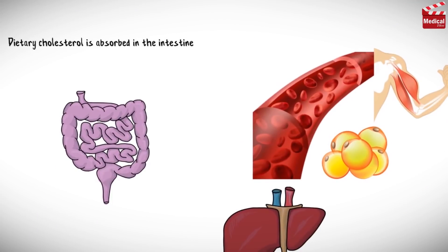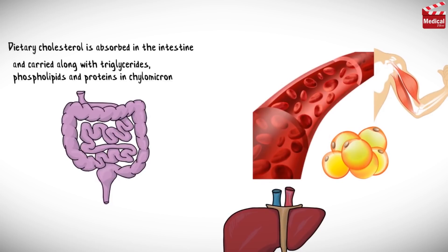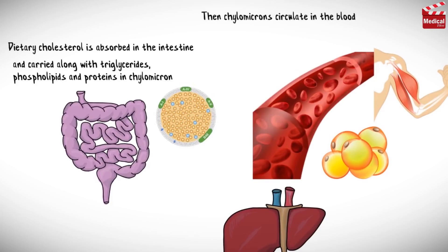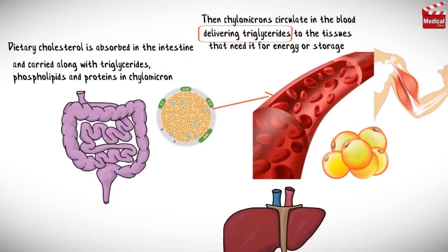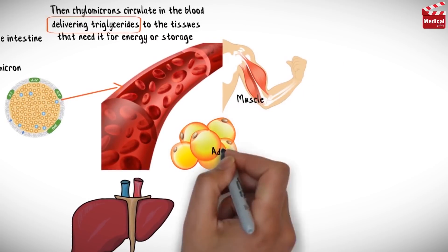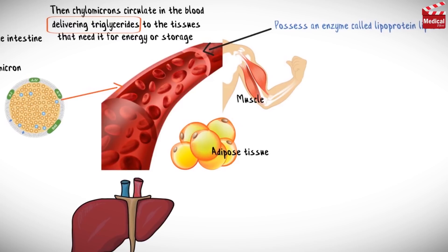Dietary cholesterol is absorbed in the intestine and carried along with triglycerides, phospholipids, and proteins in chylomicrons. Chylomicrons circulating in the blood deliver triglycerides to the tissues that need it for energy or storage in muscle and adipose tissue. The capillaries possess an enzyme called lipoprotein lipase that hydrolyzes the triglycerides to fatty acids, then fatty acids enter the muscle cells for energy and adipocytes for storage.